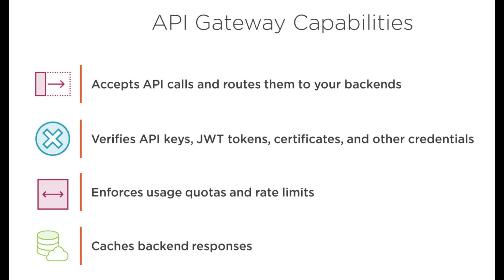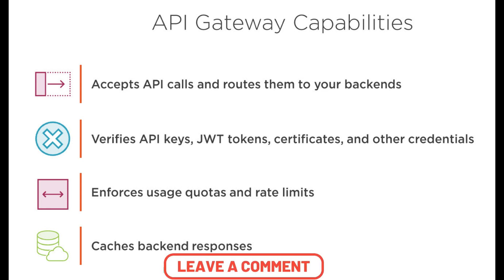The API gateway also caches backend responses. The cache mechanism helps speed up request-response cycles — we don't always need to talk to the backend if the response is going to be the same static data. For example, categories generally don't change frequently, so we can set how long the cache should be maintained and it can respond immediately. Those are a few of the API gateway capabilities, and we will see more in the demo.